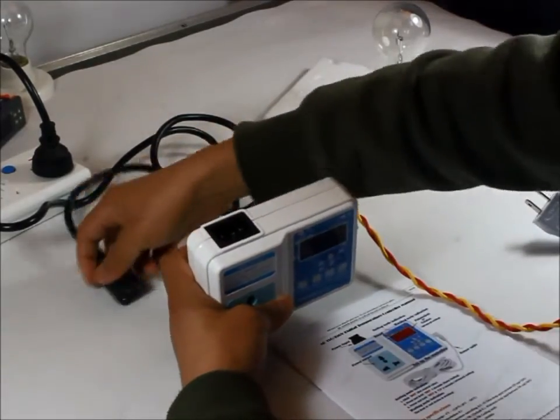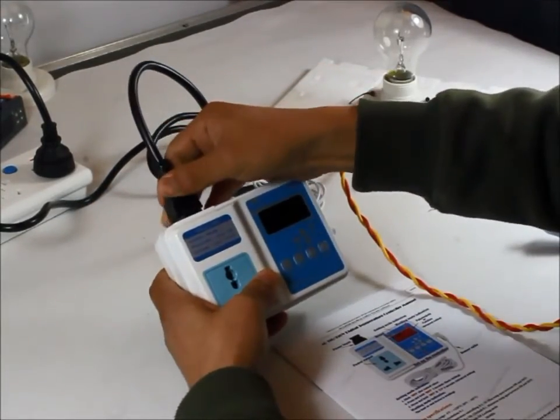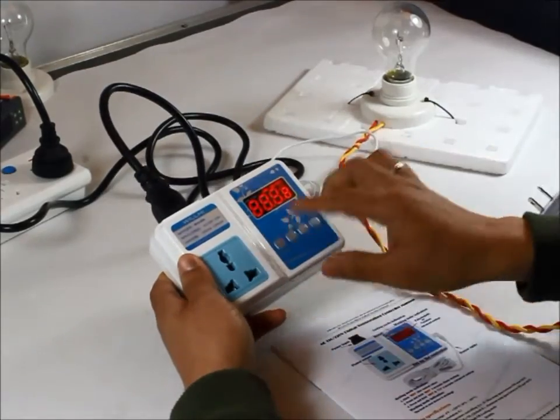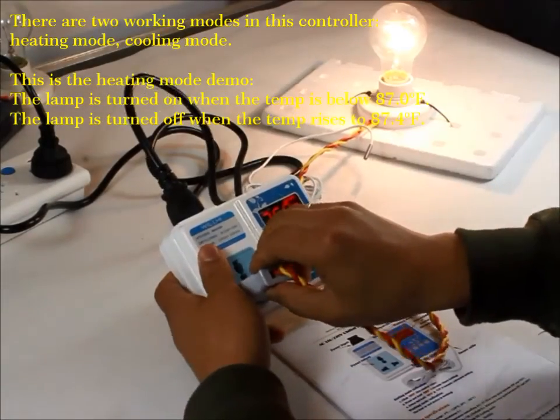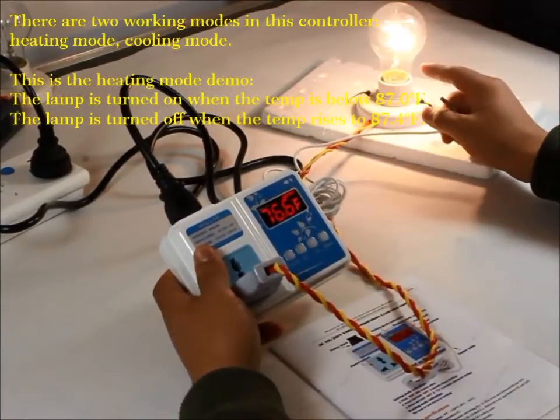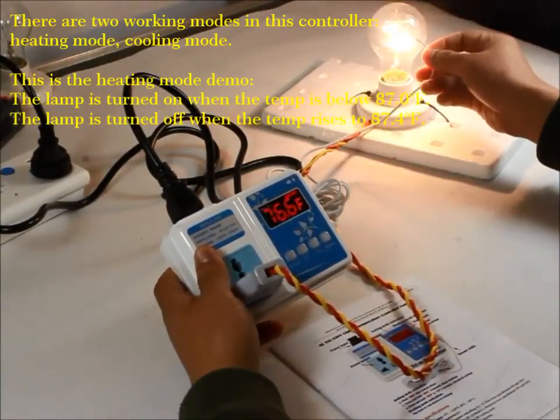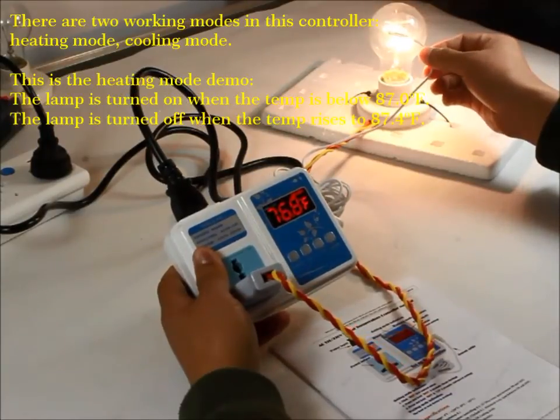This is power for the controller. This is outlet for the device you want to control. Then the device will be turned on or turned off according to the temperature the probe detected.